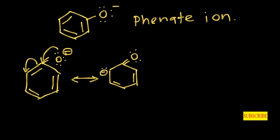Now we need to consider the third resonance structure. This lone pair of electrons jumps onto the adjacent carbon, and the pi bond is broken as a lone pair of electrons on the adjacent carbon. Keep in mind that you need to use resonance arrows to draw all the resonance structures. Our third resonance structure should look like this.